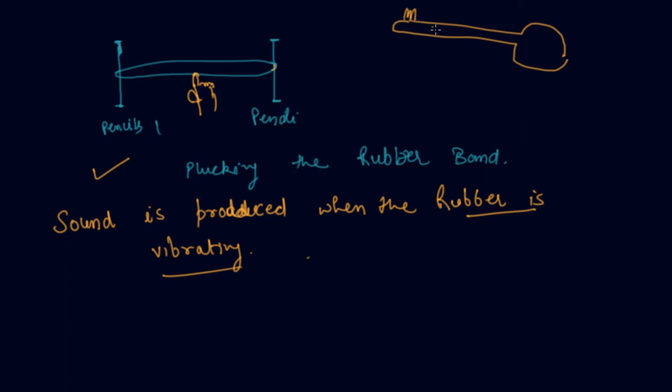This is a guitar with strings. Whenever a guitarist plucks a string with his finger, this string goes into vibration. You listen to a sound and the sound is produced by this string. Whenever it goes into vibration, a sound is produced.